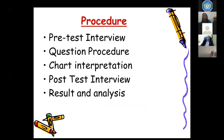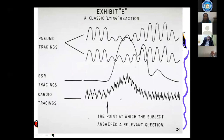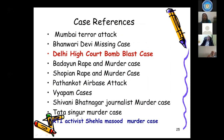The polygraph procedure includes: pre-test interview, question procedure, chart interpretation, post-test interview, result and analysis. It replaces third degree methods and can provide investigative leads. Polygraph is an aid to the investigating officer. After polygraph, it leads the investigating officer to corroborate with other forensic evidence. A charge sheet will not be done on the basis of polygraph alone — it is an aid to investigation, not a basis for conviction.